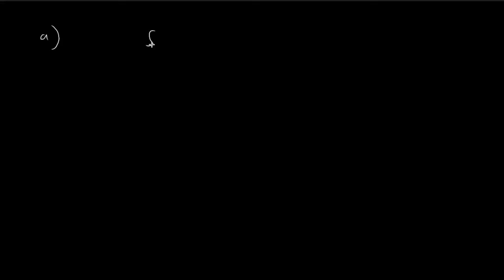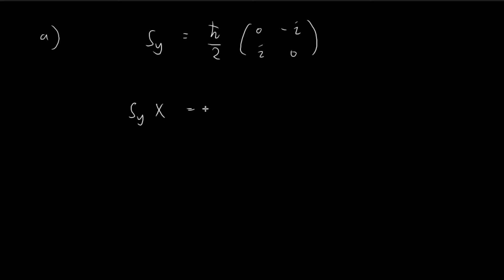For part A of this problem, we're starting off with the operator Sy, and we're going to look for its associated eigenvalues and eigenvectors. If x is the eigenvector, then applying Sy to x gives us its eigenvalue multiplied by x. Moving everything to the left-hand side, we have Sy minus lambda times the identity matrix times x equal to 0.